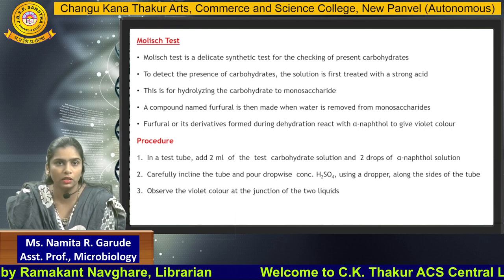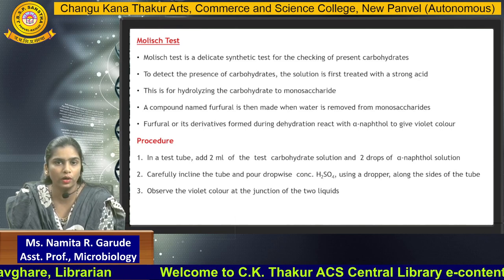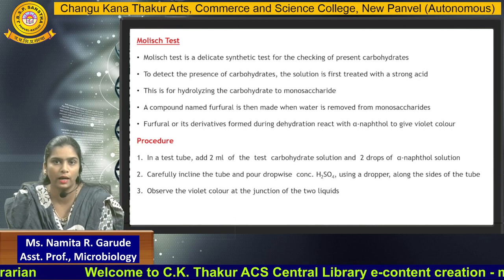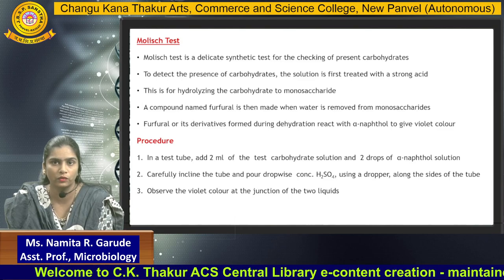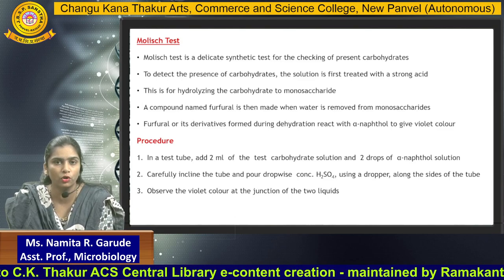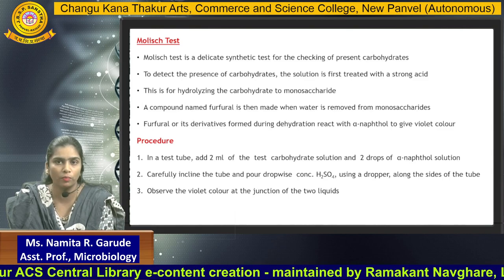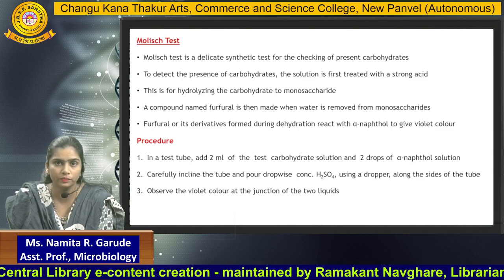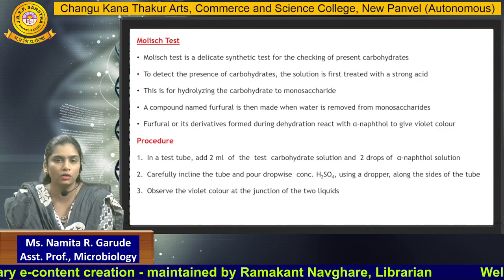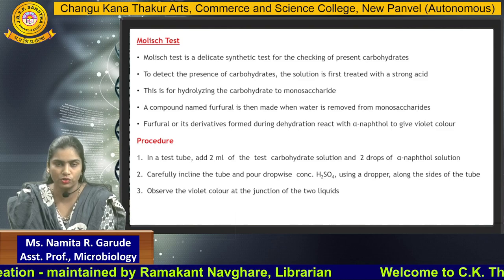Procedure for the Molisch test: In a test tube, add 2 ml of the test carbohydrate solution and two drops of alpha-naphthol solution. Carefully incline the tube and pour drop-wise concentrated H2SO4 using a dropper along the side of the tube, and observe the violet color at the junction of these two liquid solutions.